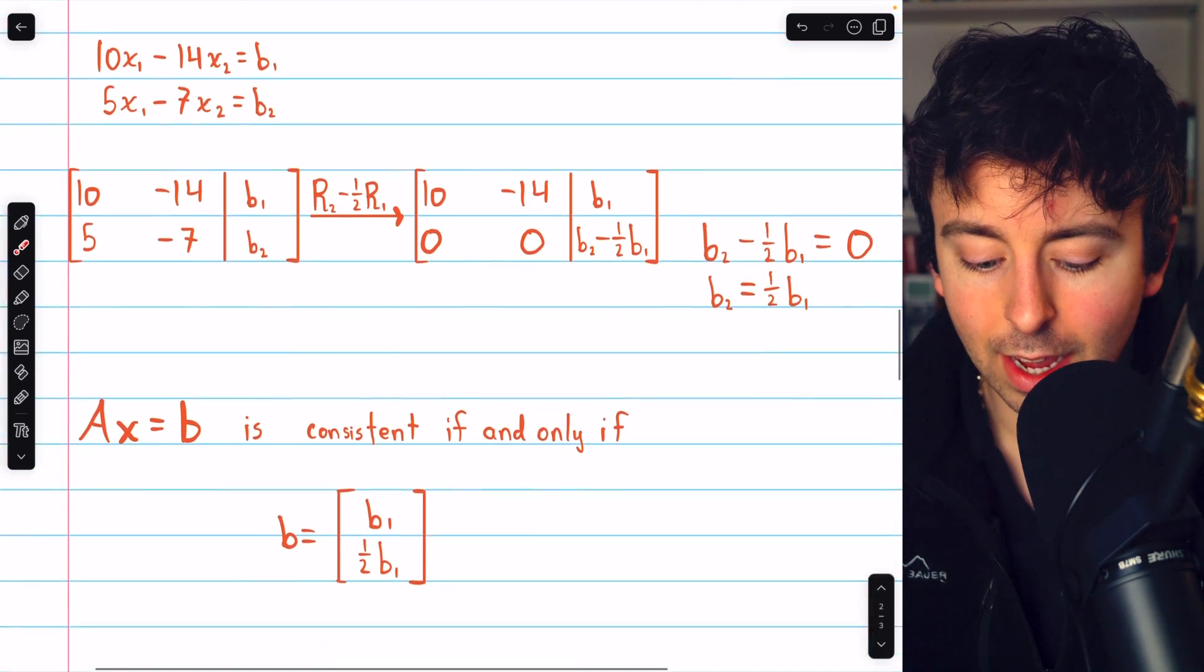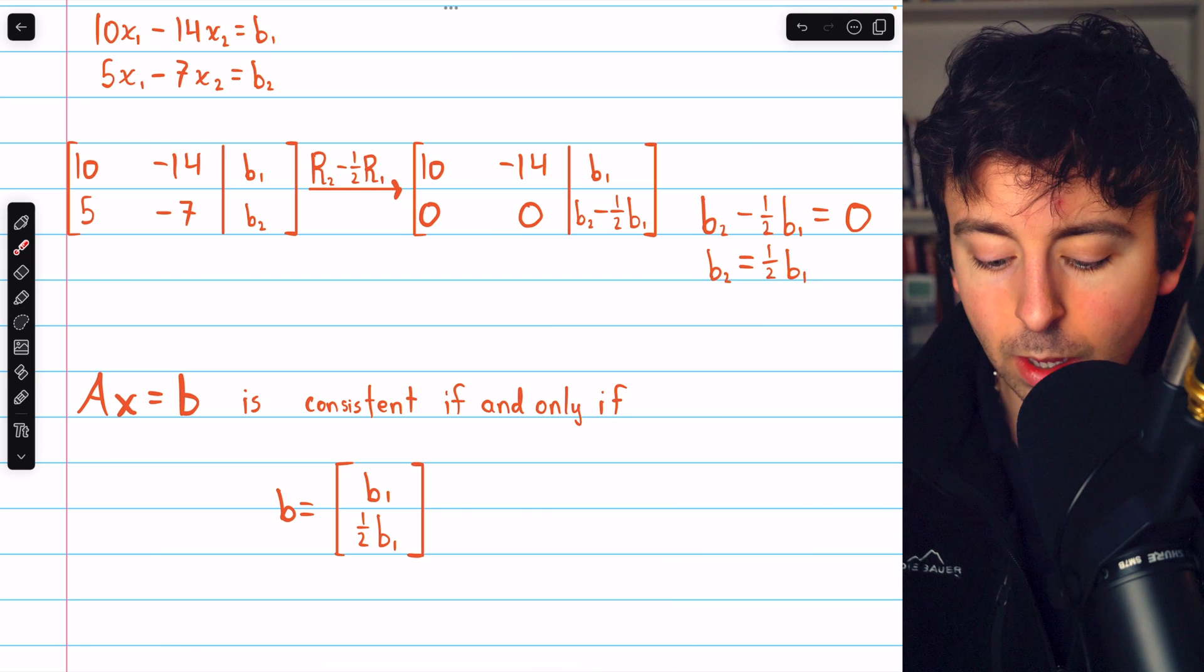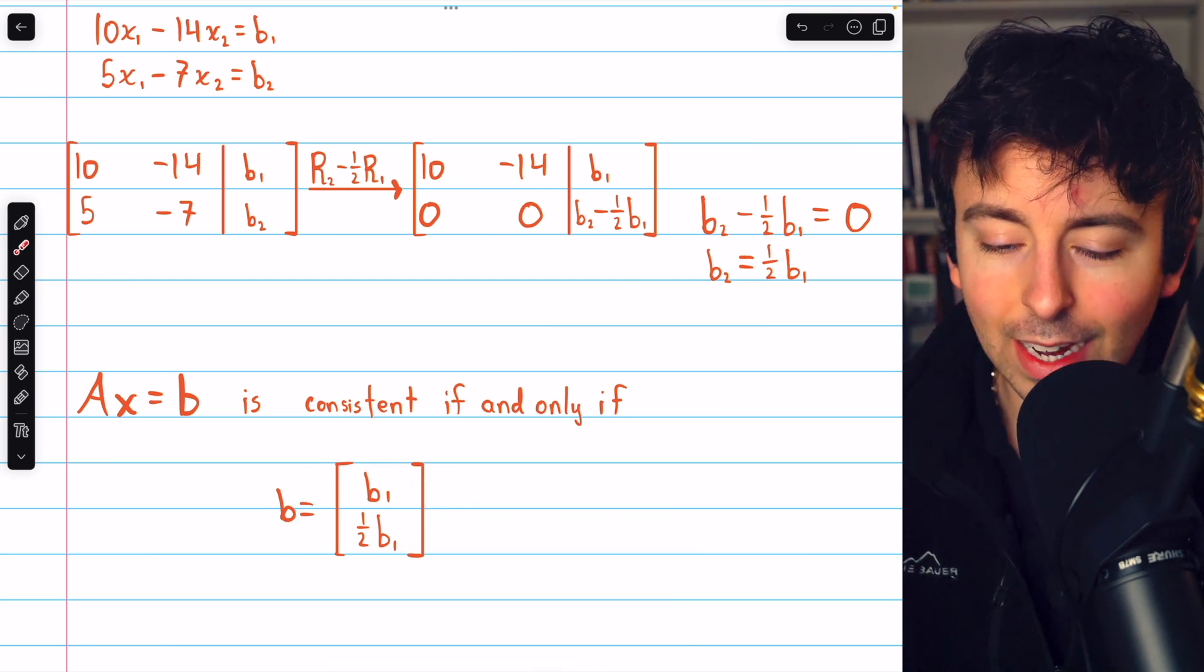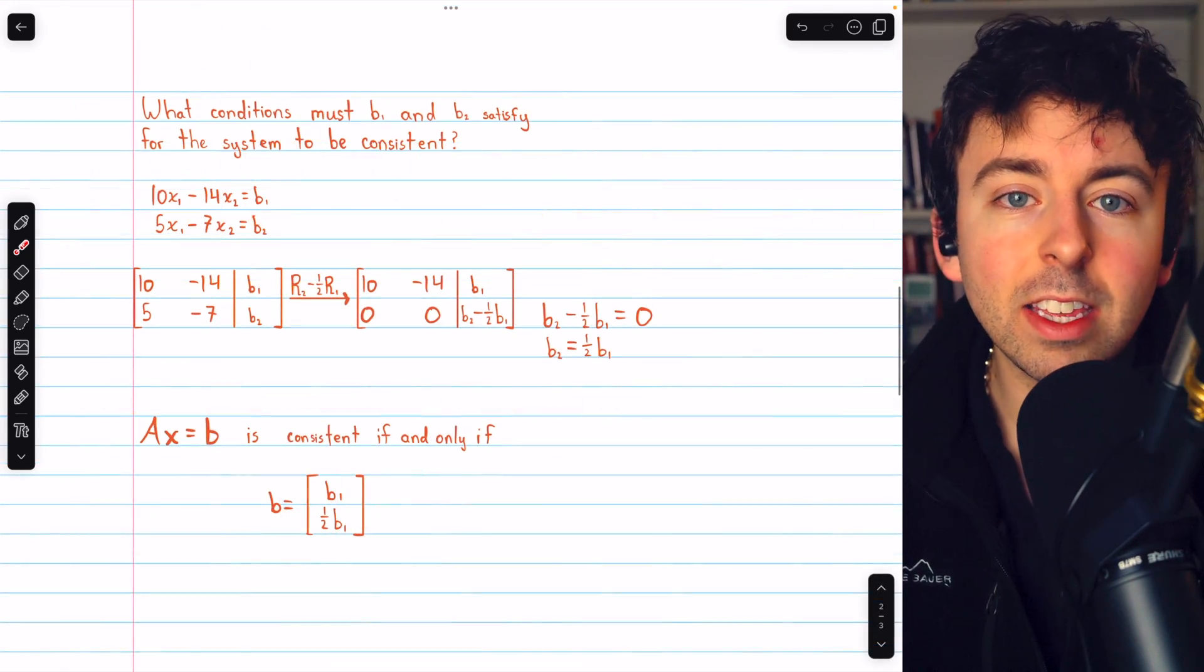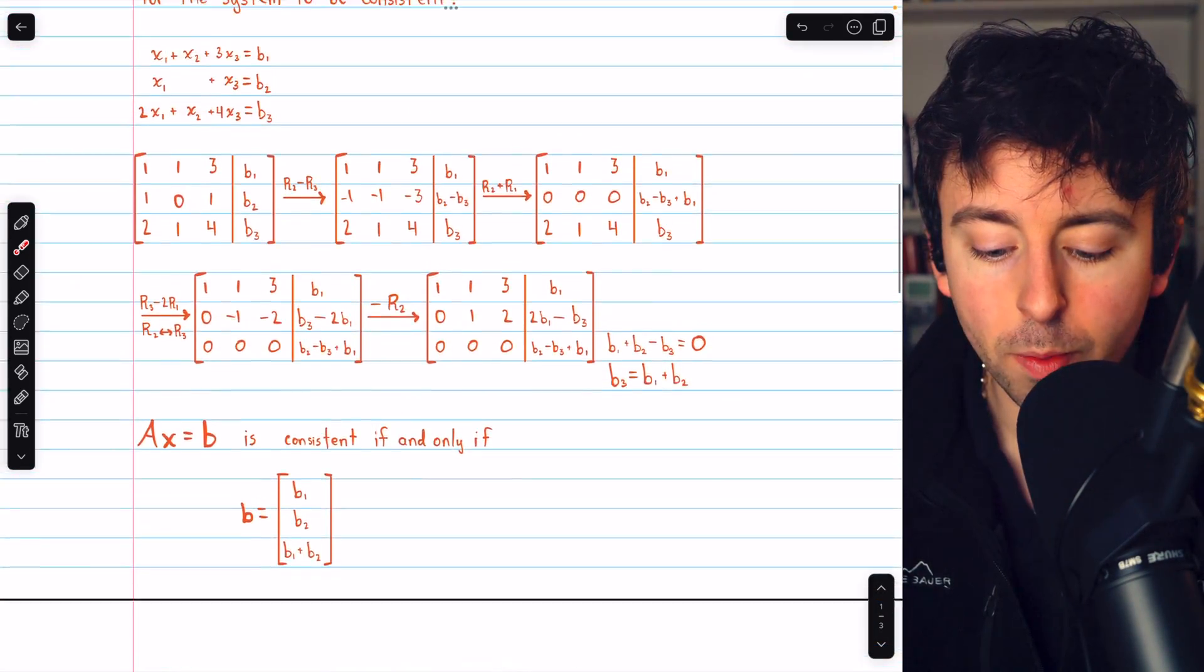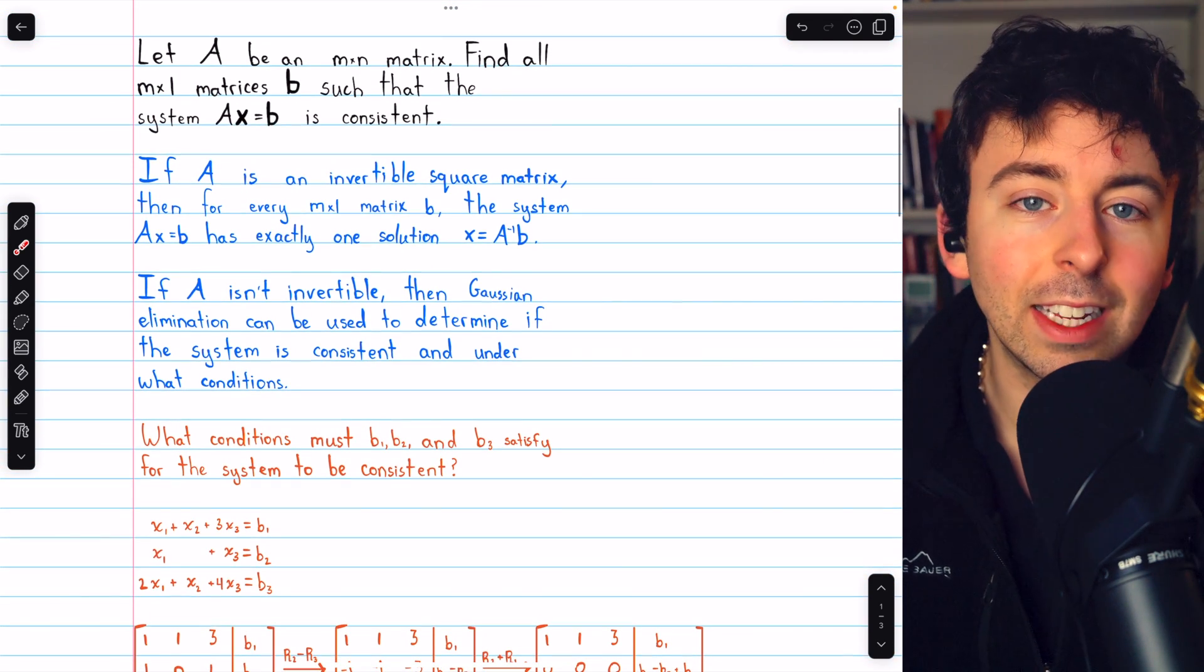Thus, our solution is this. The system Ax equals b will be consistent if and only if the column vector b is of this form, so that its second entry is half of its first entry. And that's how to use Gaussian elimination to determine if a system of equations is consistent, and if so, under what conditions.